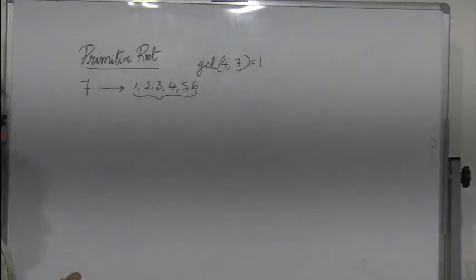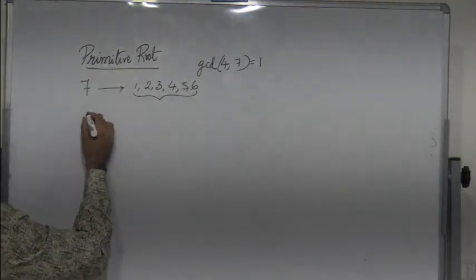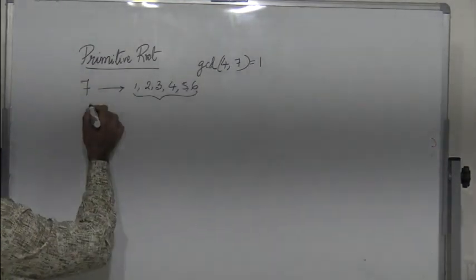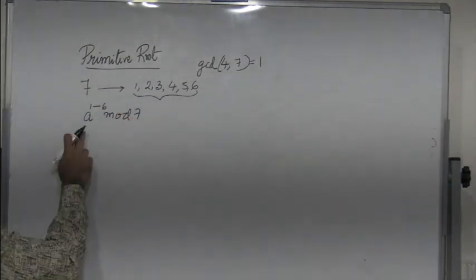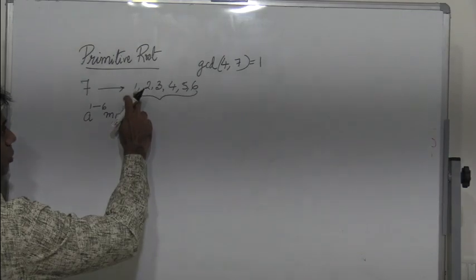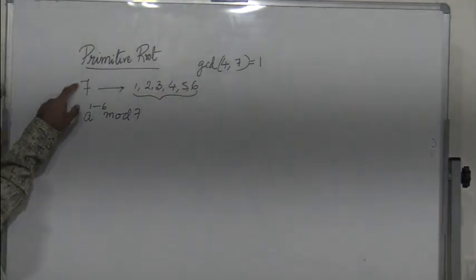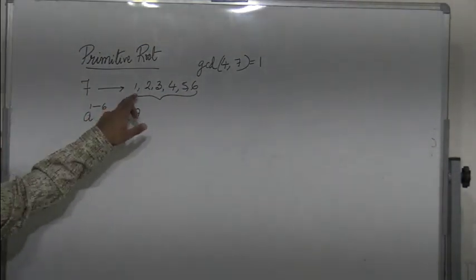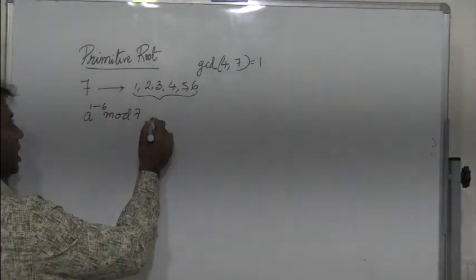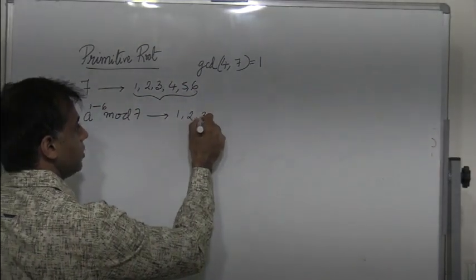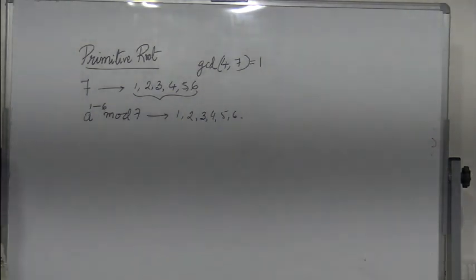To find the primitive root of 7, we raise the given number a to powers 1 through 6 in mod 7. Here a can be 1, 2, 3, 4, 5, or 6 — numbers which are relatively prime to 7. We raise a to powers 1 through 6 because all these numbers are relatively prime to 7, and that should generate all numbers which are relatively prime to 7. Such a number a is known as a primitive root of 7.